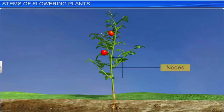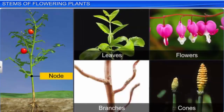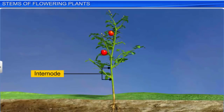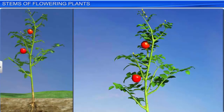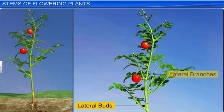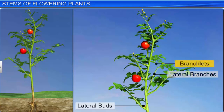A stem usually has many nodes and internodes. A node is a region from where leaves, flowers, branches or cones emerge, while an internode is the portion between two nodes. As the stem grows, many lateral buds emerge which grow into lateral branches. These branches further develop other lateral shoots, called twigs or branchlets.